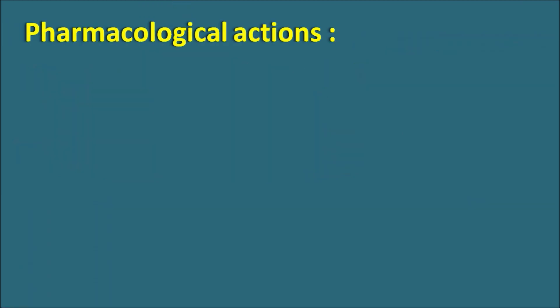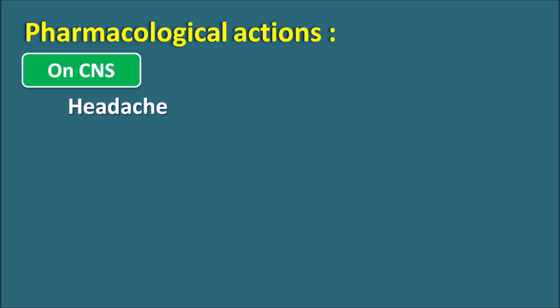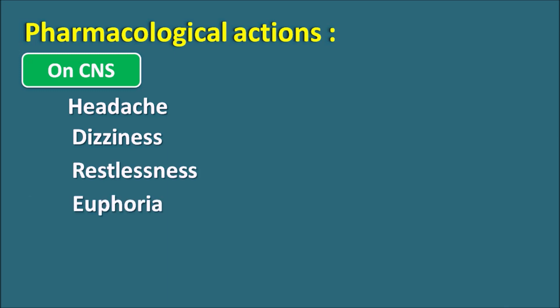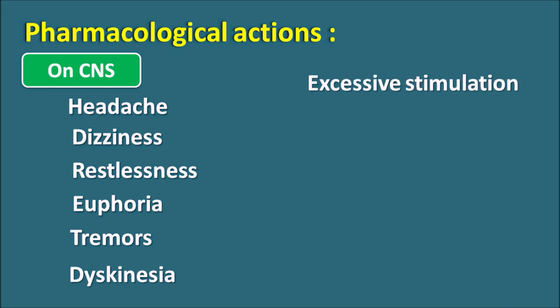The pharmacological actions: since this drug acts mainly as a CNS stimulant, the primary pharmacological actions are on the CNS. These include headache due to cerebral vasodilation, dizziness, restlessness, agitation, and euphoria — which can result in addiction problems and make amphetamine derivatives drugs of abuse. Tremors and dyskinesia can also be observed. At high doses, amphetamine can produce excess CNS stimulation, precipitating seizures and psychotic symptoms. At therapeutic doses it produces mild CNS stimulation, but at toxic doses it can cause seizures, psychosis, and insomnia.